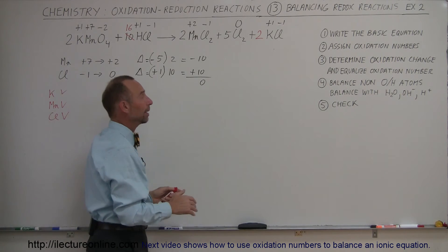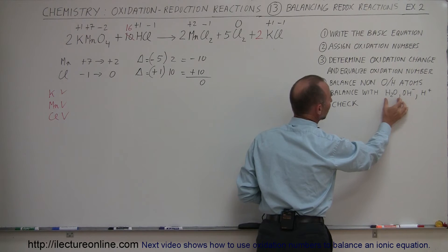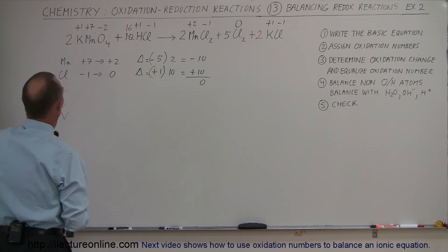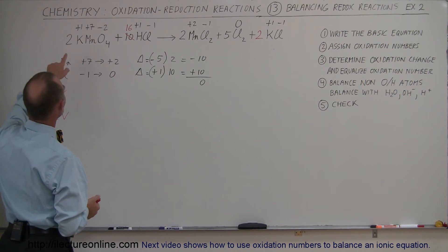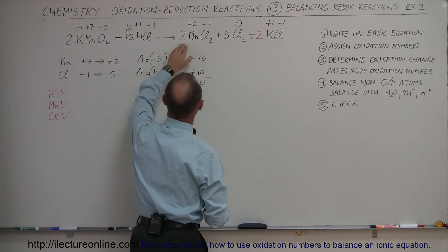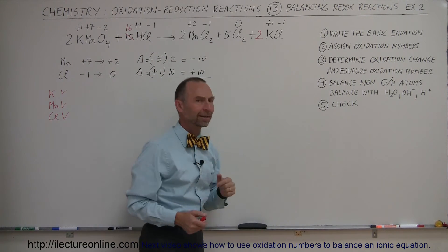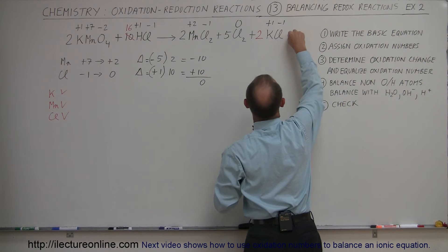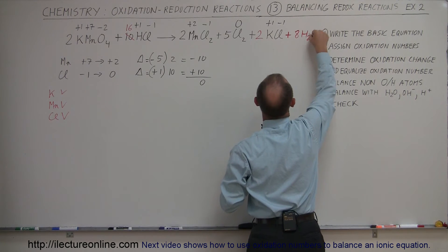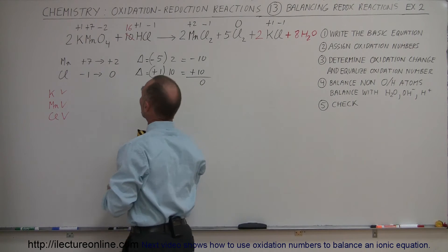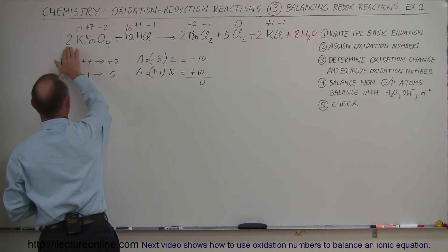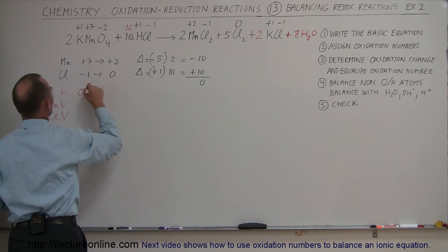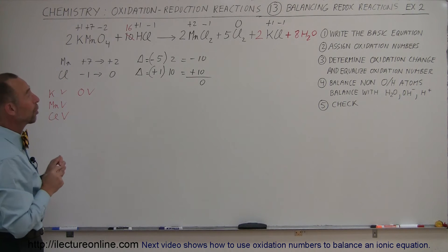Now we balance the rest of the equation by adding water, the hydroxide ion, and the hydrogen ion to either side. We start with oxygen — we have 8 oxygen atoms on the left side and none on the right side. That means we need to add 8 oxygen on the right side, which we do by adding 8 water molecules: plus 8 H₂O. Now oxygen is balanced — 2 times 4 is 8 on the left, and 8 times 1 is 8 on the right.